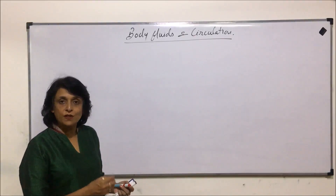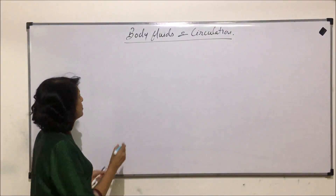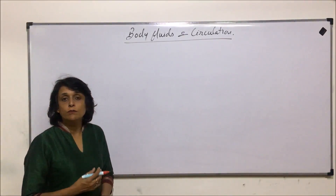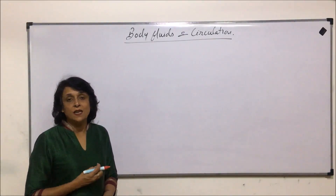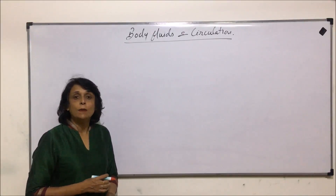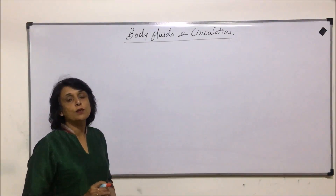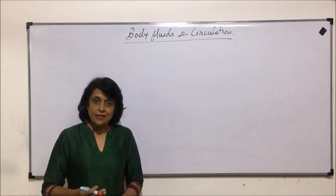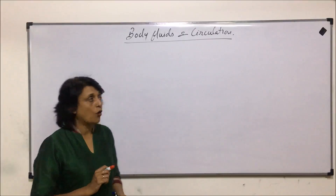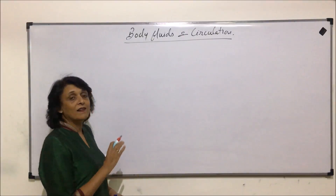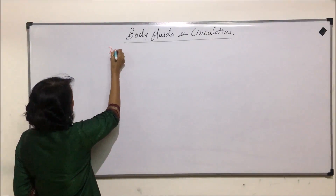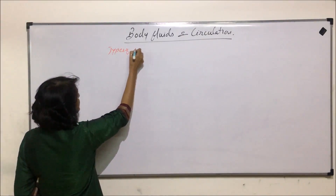As we are starting this chapter, let us understand a few basic things before we take up the actual structures. When we talk of body fluid — something circulating in the body — the purpose is uniform distribution of either respiratory gases or the food which has been absorbed. So we can classify the circulation into two categories.